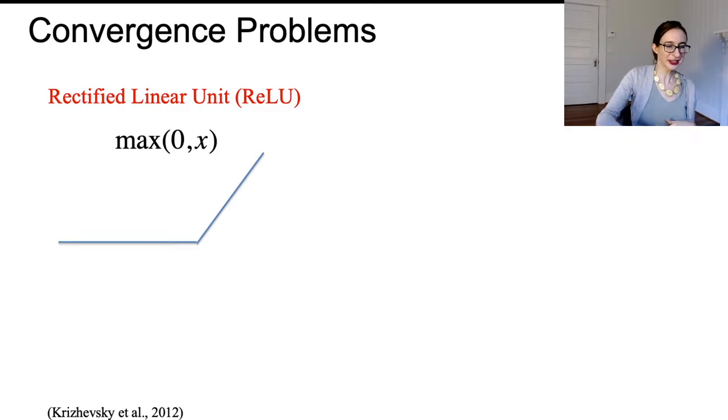With the ReLU, it removes vanishing gradients when the nodes are activated. In other words, if there is a signal that's greater than or equal to zero, the neuron will fire proportionally to what the input is, and then otherwise it won't fire at all. That's not biological, but it actually really helps because it creates gradients when the nodes are activated.